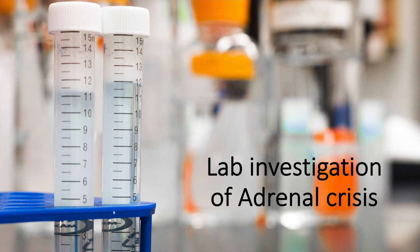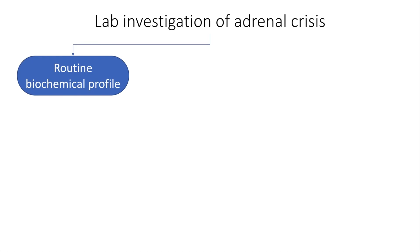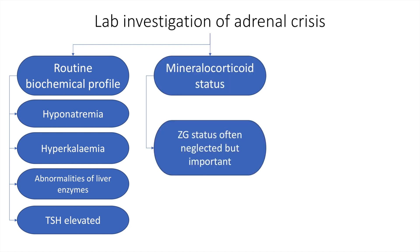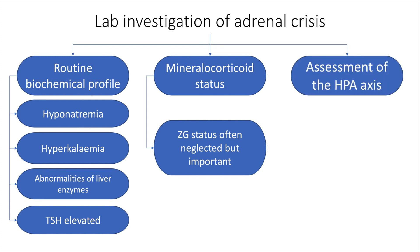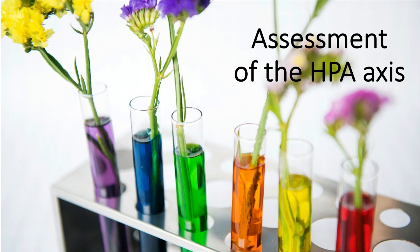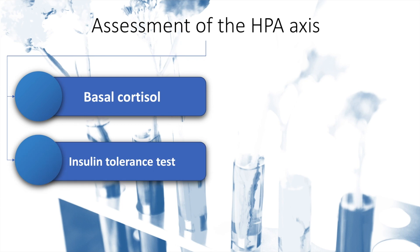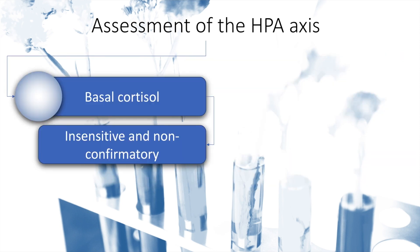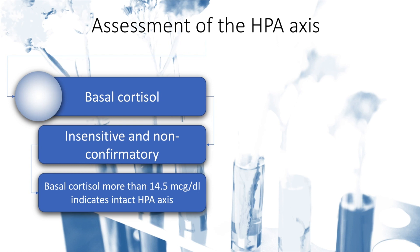The lab diagnosis of adrenal crisis and adrenal insufficiency is important. The routine biochemical profile includes hyponatremia, present in more than 85% of patients, and hyperkalemia, present in about 60% of patients. Abnormalities of liver enzymes and elevations in thyroid stimulating hormone are present in a small subset of patients. Mineralocorticoid status is often neglected but important. The HPA axis is ascertained through a basal cortisol; a level of more than 14.5 micrograms per deciliter indicates an intact HPA axis.